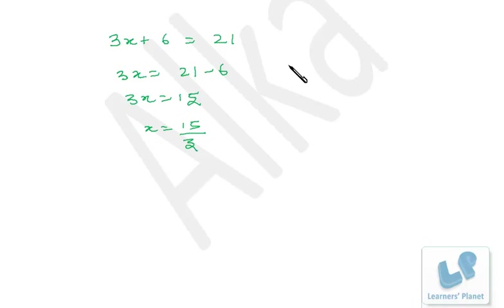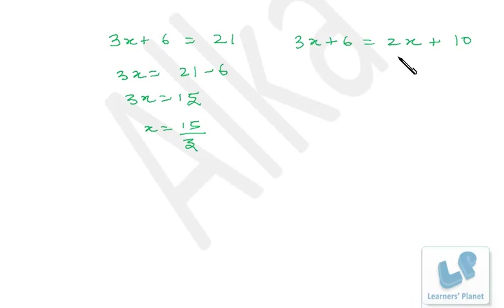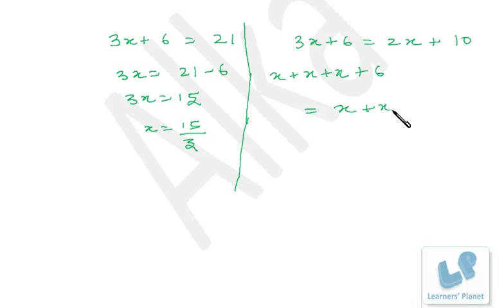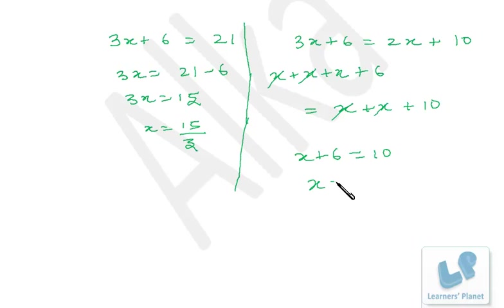Now suppose we have an equation with a variable on both sides: 3x plus 6 is equal to 2x plus 10. Here it is 3x on one side and 2x on the other. I break 3x as x plus x plus x, and 2x as x plus x. Taking out matching x terms from both sides, I'm left with x plus 6 equals 10, so x equals 4.